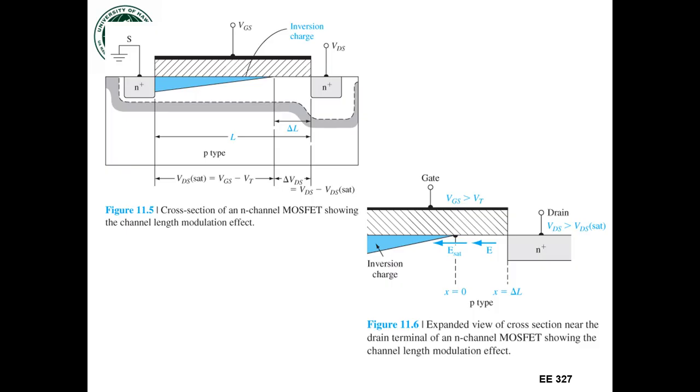Now, even if this channel length modulation occurs, I still can get current flowing through the MOSFET because my electrons, let's look at this diagram down here, my electrons that are free electrons that are in the induced channel,